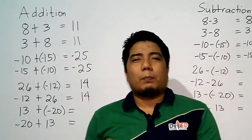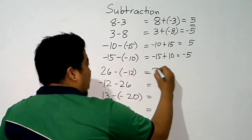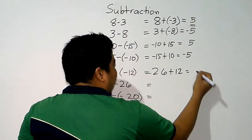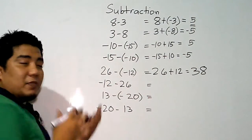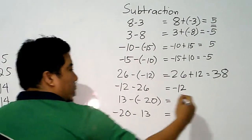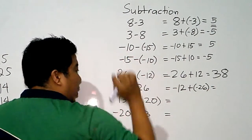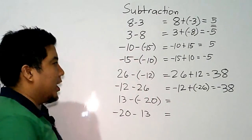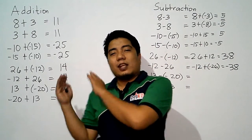Now what if that scenario is in subtraction? We have 26 minus negative 12: copy 26, change minus to plus, change negative 12 into its opposite positive 12. We have positive plus positive, so we add and get positive 38. For negative 12 minus 26: copy negative 12, change minus to plus, change positive 26 to negative 26. Both are now negative, so we add 12 and 26 giving us negative 38. As you can see, the answers are different — positive 38 and negative 38 — while in addition both gave us positive 14.